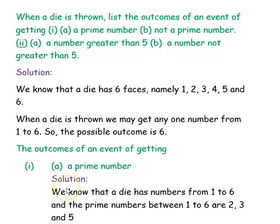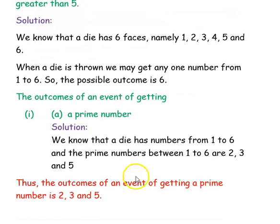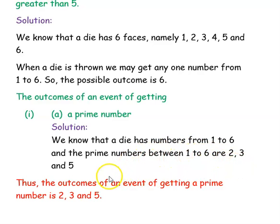The first question is the outcome of an event of getting a prime number. We know that a die has numbers from 1 to 6, and the prime numbers between 1 to 6 are 2, 3 and 5. So totally we have 3 prime numbers. Thus the outcome of an event of getting a prime number is 3, and those numbers are 2, 3 and 5.